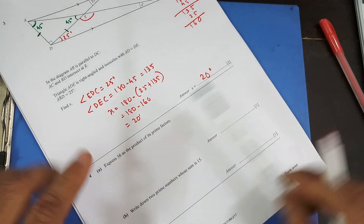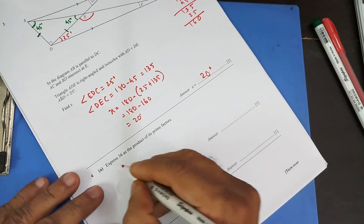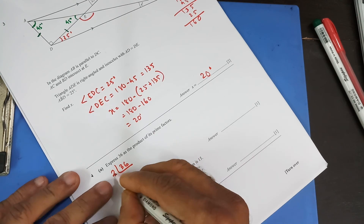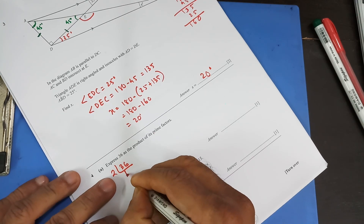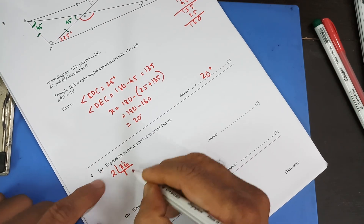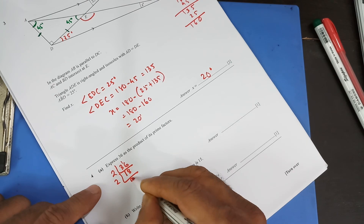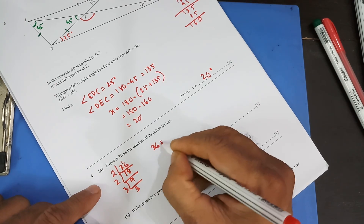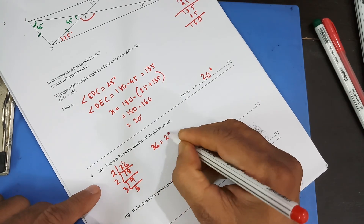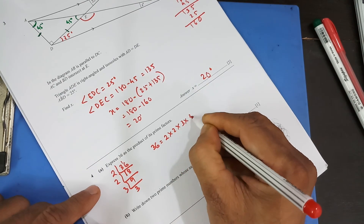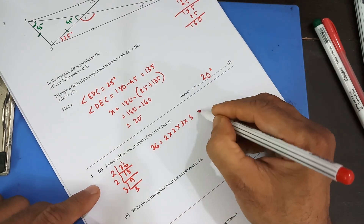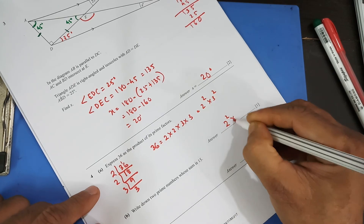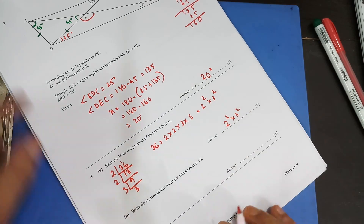Next: express 36 as a product of its prime factors using the short division method. 36 divided by 2 is 18, divided by 2 is 9, divided by 3 is 3, divided by 3 is 1. So 36 equals 2 times 2 times 3 times 3, or equivalently 2 squared times 3 squared.